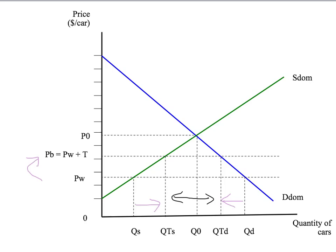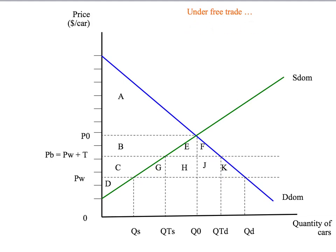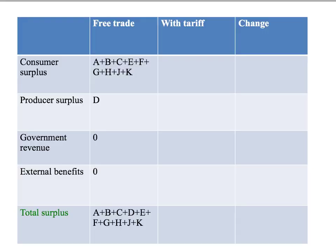Now let's ask our normal question: who wins, who loses and why? Let's do the welfare economics. We've labelled all the relevant areas A, B, and so on through to K. Starting with the case under free trade: the price Australians paid for cars was PW. Given that price, domestic suppliers are willing to supply QS cars and they get producer surplus given by area D. At price PW, domestic consumers want to buy QD cars — they buy QS domestic cars and the rest, up to QD, are imports. Consumer surplus is the area under demand, above price, up to quantity: areas A, B, C, E, F, G, H, J, and K. Adding producer surplus and consumer surplus gives total surplus.